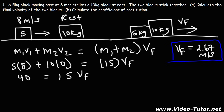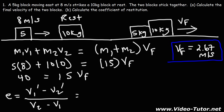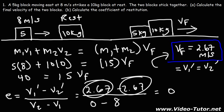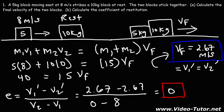Part B: calculate the coefficient of restitution. That's going to be V1 prime minus V2 prime over V2 minus V1. Since the two blocks stick together, V1 prime and V2 prime are both equal to 2.67. V2 was at rest so that's 0, and V1 was 8. Because the two blocks are sticking together and moving at the same speed, the coefficient of restitution will be 0, since these two values cancel out. This tells us we're dealing with a completely inelastic collision — you'll always have that situation whenever the two blocks stick together.